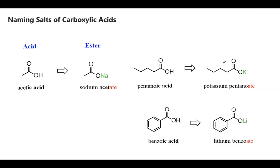Carboxylic acids react with bases to form salts. For example, acetic acid reacts to make sodium acetate — the suffix '-ate' is used for salts, and you specify the metal. Pentanoic acid with potassium gives potassium pentanoate. Benzoic acid is an aromatic carboxylic acid, and its salt with lithium is lithium benzoate.